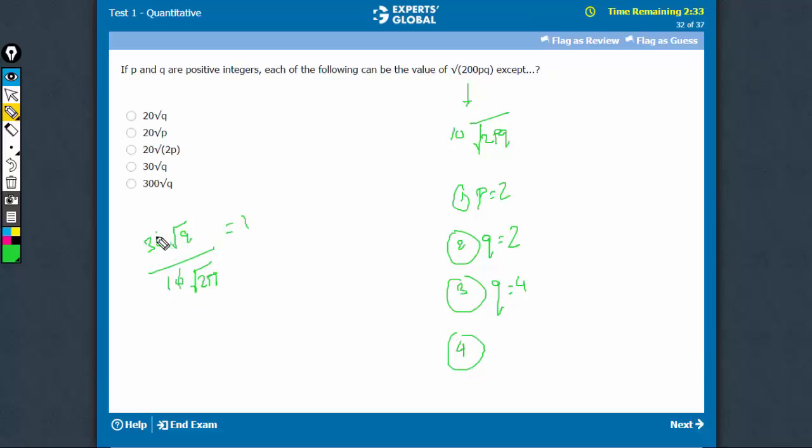Zeros can go and q can go. So 3 upon root 2p is equal to 1. Of course, p is not going to be an integer here and therefore, this value is not possible.